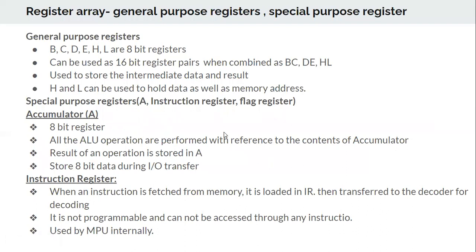As explained in the last presentation, B, C, D, E, H, and L are 8-bit registers. B and C can be combined to form a 16-bit register, used for operations that involve 16-bit data. The accumulator is an 8-bit register where intermediate results are stored.